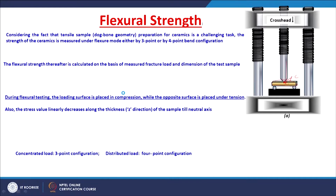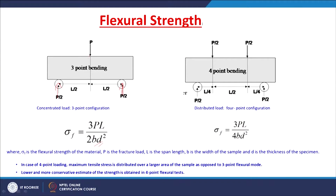In 3-point bending, the load is given at one top surface of the material — a rectangular block having certain dimensions B and D. The load applied on the top surface is supported from two different locations from the bottom surface. The top surface is under compression. You increase the load and at a certain load the fracture will happen. You note down the load P at which fracture happens; L is the span length, B is the width, and D is the thickness. For a rectangular specimen, the flexural strength in 3-point bending configuration becomes 3PL divided by 2BD squared.